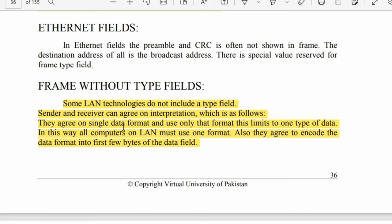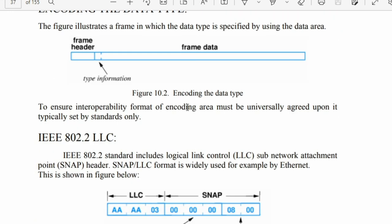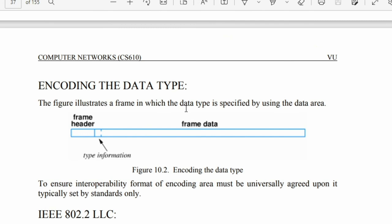They agree to encode the data format into the first few bytes of the data field. When the sender and receiver do not agree, they use separate methods to identify the frame type.